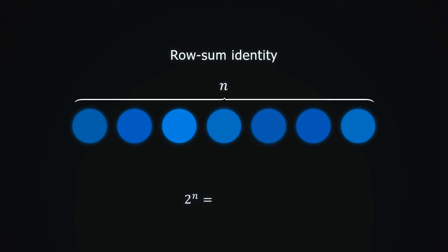Let's count differently. This time focusing on the size of the group. First, we can take no objects. There is only one way to do that, or equivalently, n choose 0 ways. Then we can take just one element, for which there are n ways. Or in other words, n choose 1.